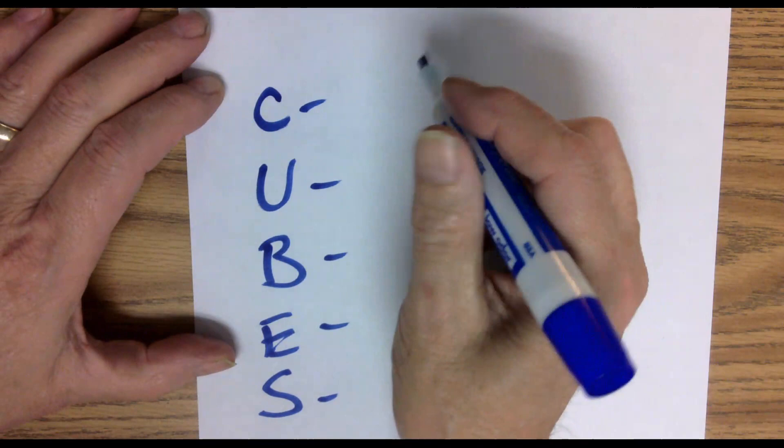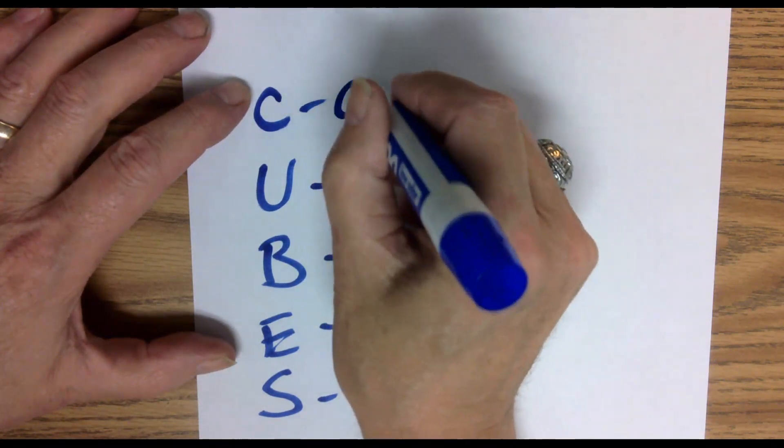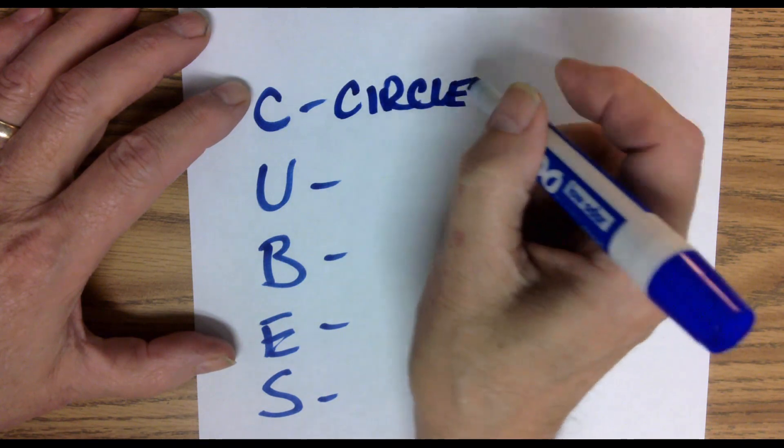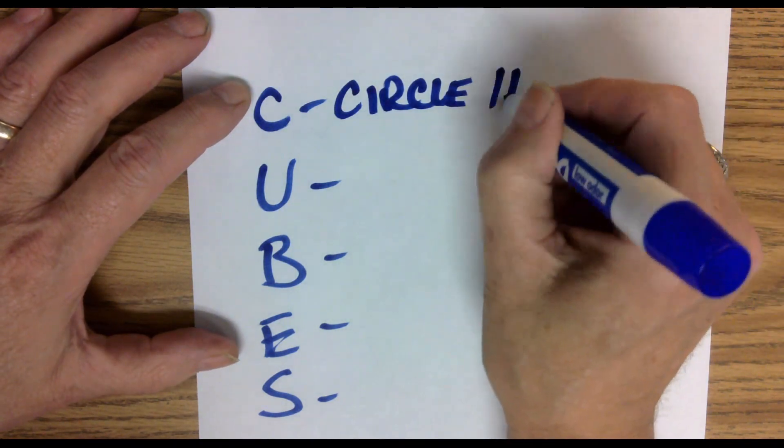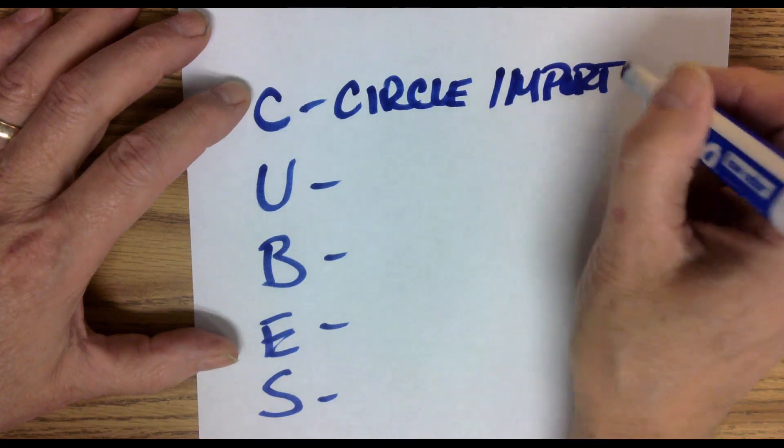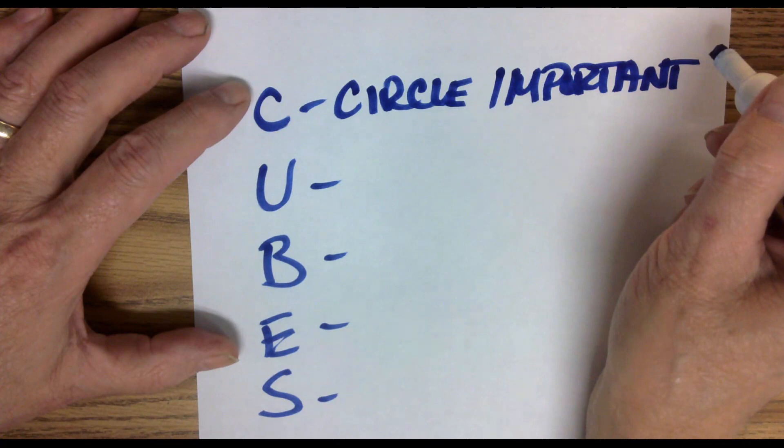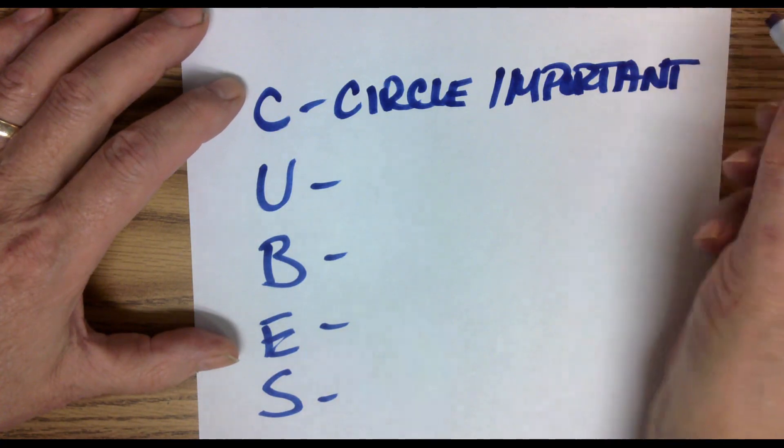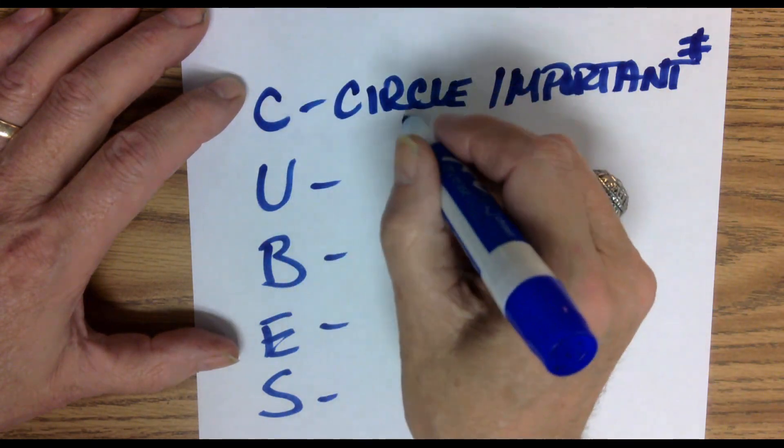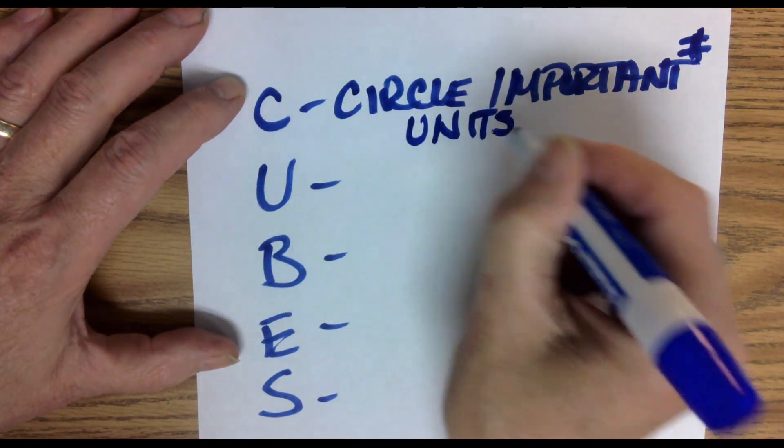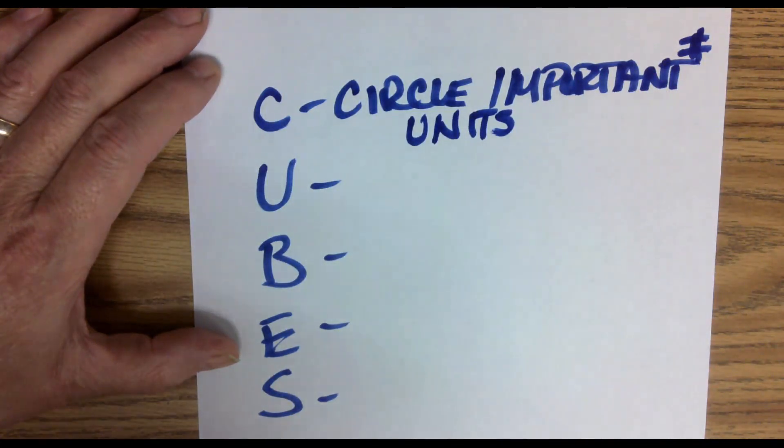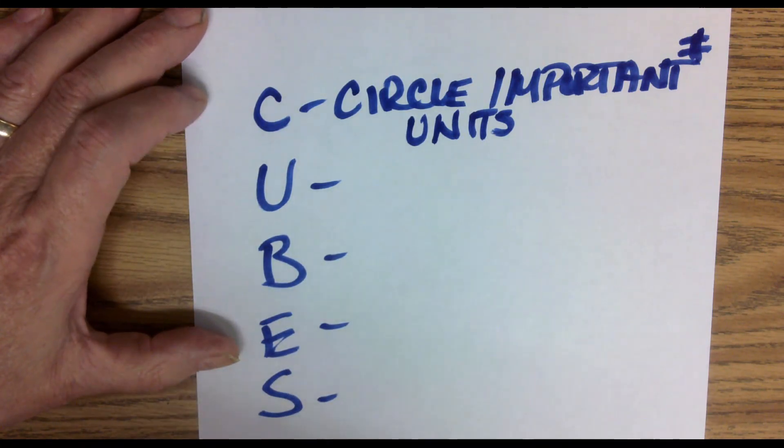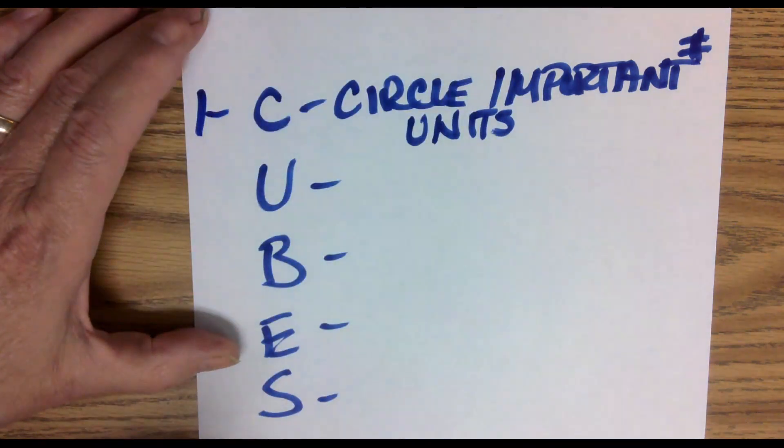C stands for circle important numbers and units. So you're going to go through it the second time. You're going to start circling any kind of important numbers that you need, any kind of important units. Because your answer has to be in a specific unit and you have to know what that is. So number one, circle important numbers and units.